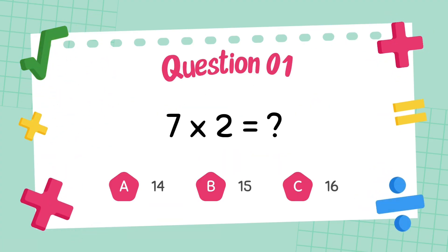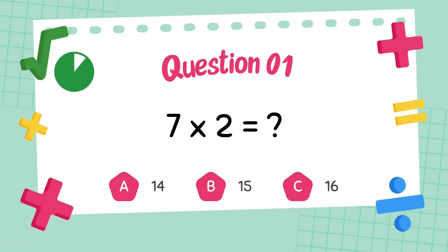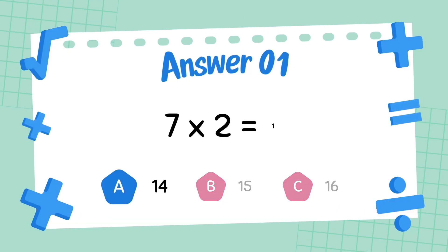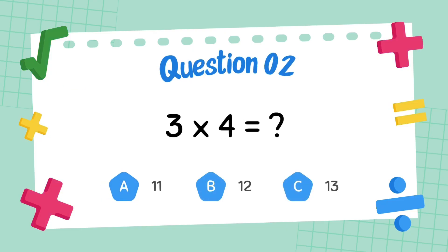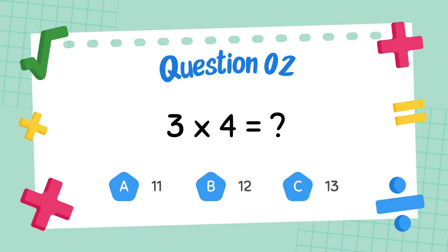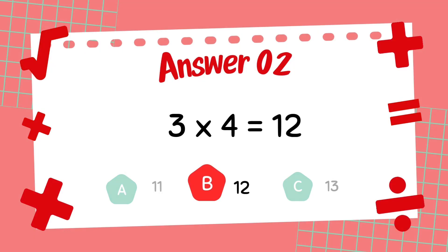What is 7 multiply 2? The answer is 14. What is 3 multiply 4? The answer is 12.